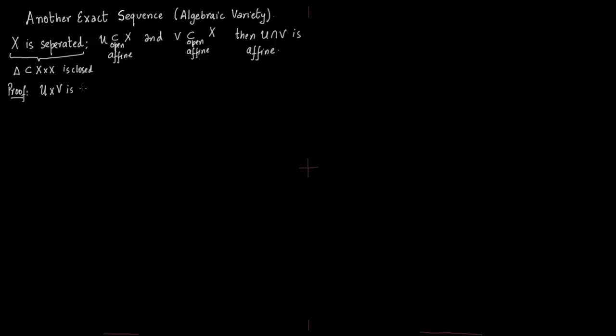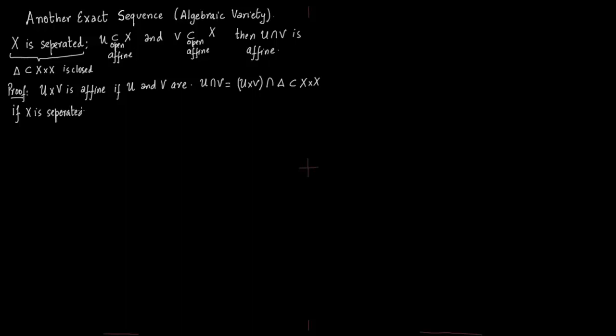Proof: U times V is affine if U and V are affine. This is easy to see — you just take the polynomials of U and of V, append them together, and you get U times V as affine. What we want to show is that U intersection V is also affine. U intersection V can be defined as U times V intersected with the diagonal, where the diagonal is {(x,x)}. Now if X is separated, this diagonal is closed, so U intersection V is a closed subset of U times V.